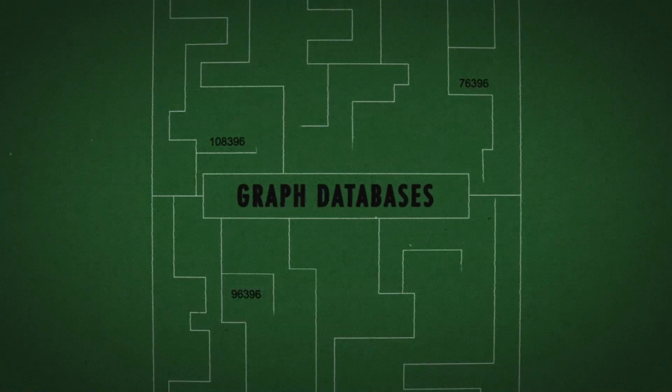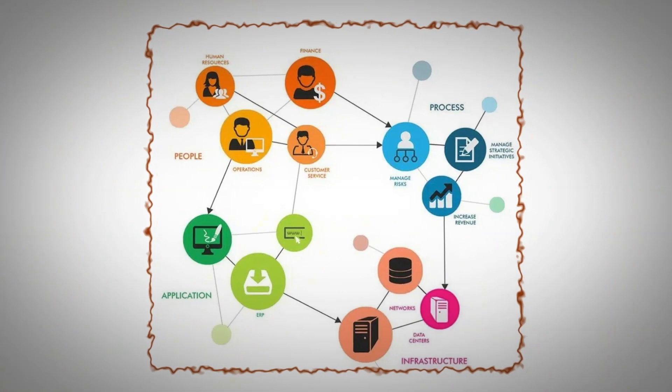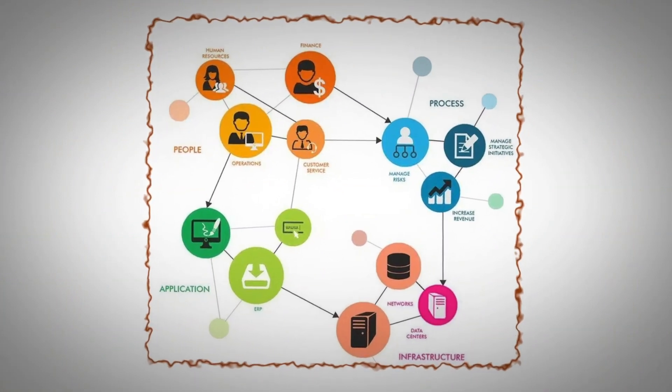Next we have graph databases. If we have a requirement to store data in the form of graphs — maintaining relations between two entities, creating a graph, and building knowledge graphs or deriving insights from that graph — we go for graph databases. Examples include TigerGraph and Neo4j, along with cloud offerings. Use cases include recommendation algorithms and knowledge graphs.